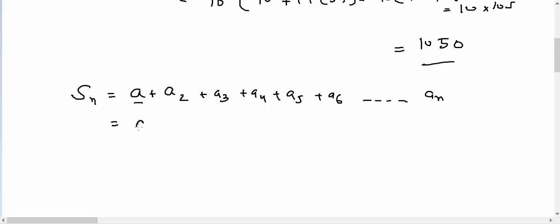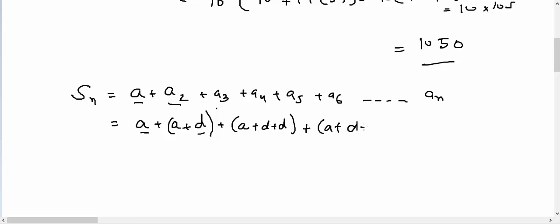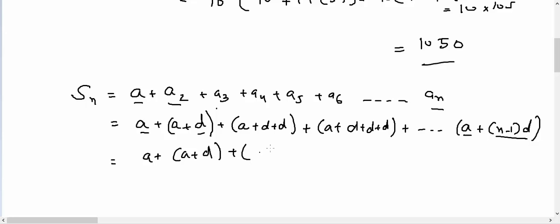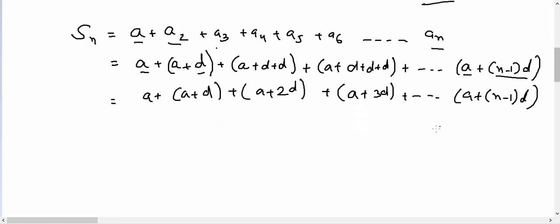We know the first term is represented by A. The second term can be found by just adding the common difference D to the first term. The third term is found by adding the common difference twice, the fourth term three times, and so on. So the nth term, an, equals A plus (n−1) times D. This gives us: Sn = A + (A+D) + (A+2D) + (A+3D) + … + (A+(n−1)D).